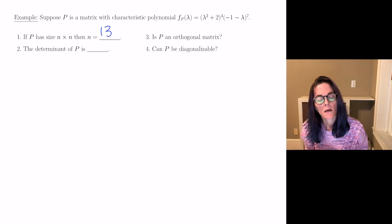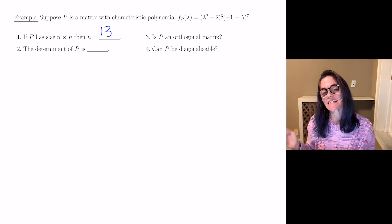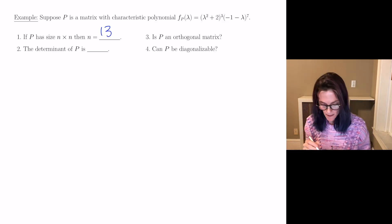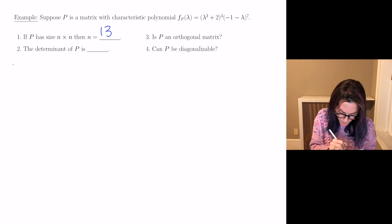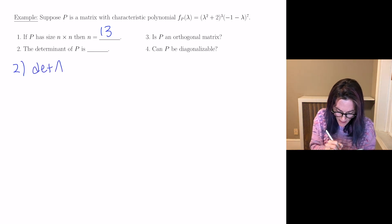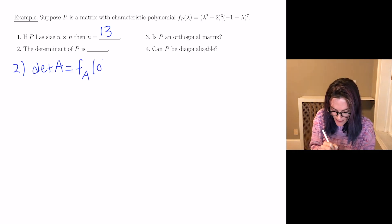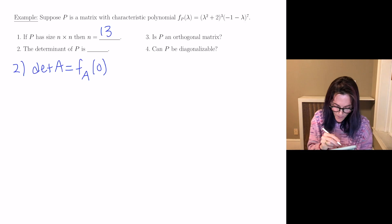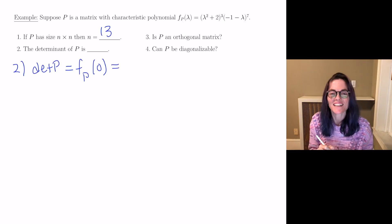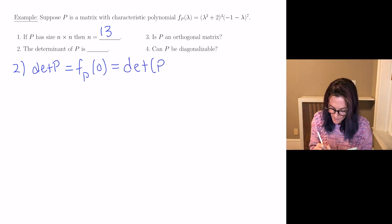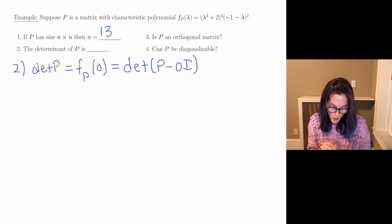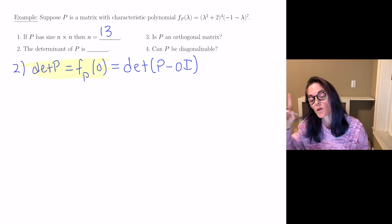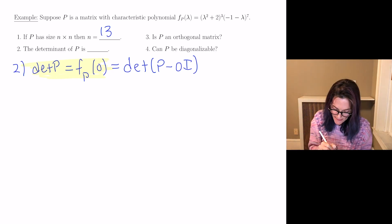The determinant of P: it is always the case that the determinant of A equals the characteristic polynomial evaluated at 0. The characteristic polynomial at 0 gives the determinant of P minus 0I. So here we get 2 cubed times minus 1 to the 7th, which is minus 8.